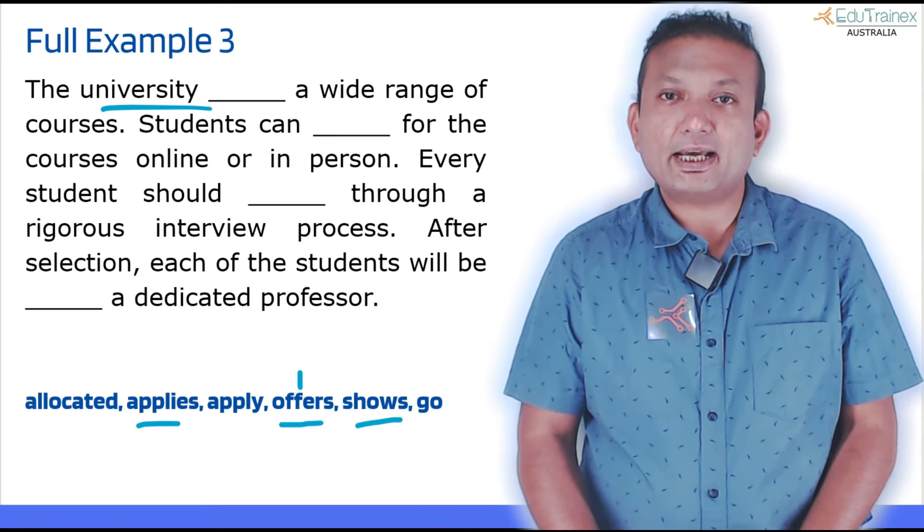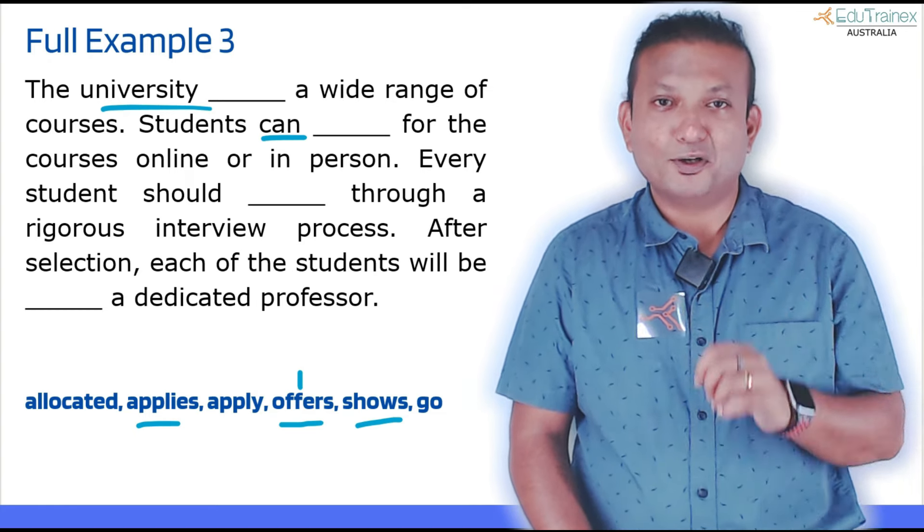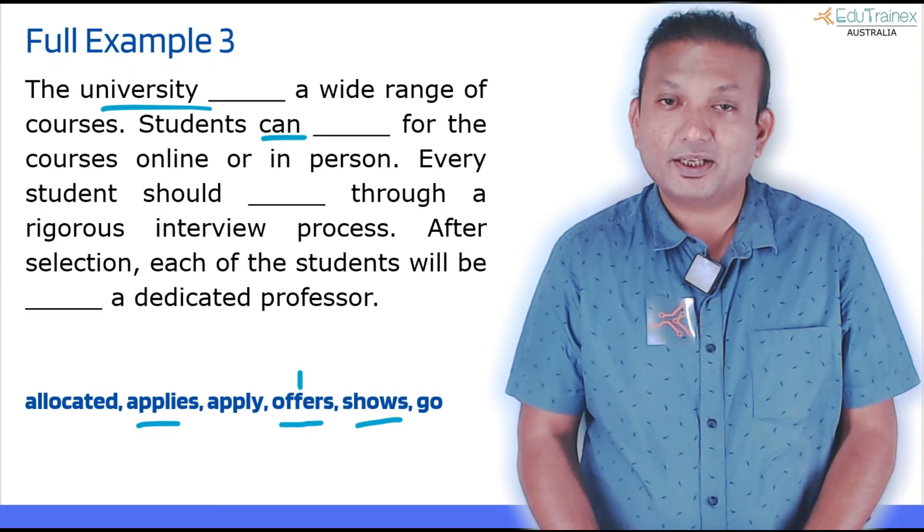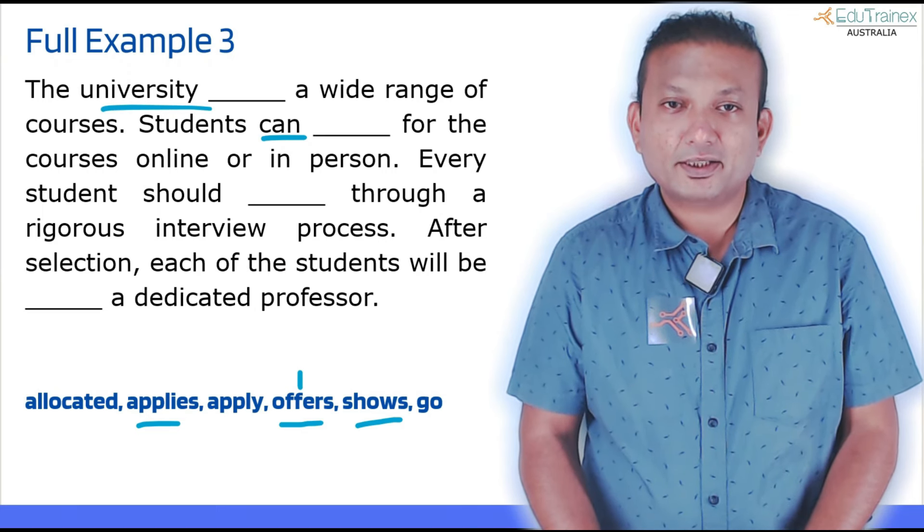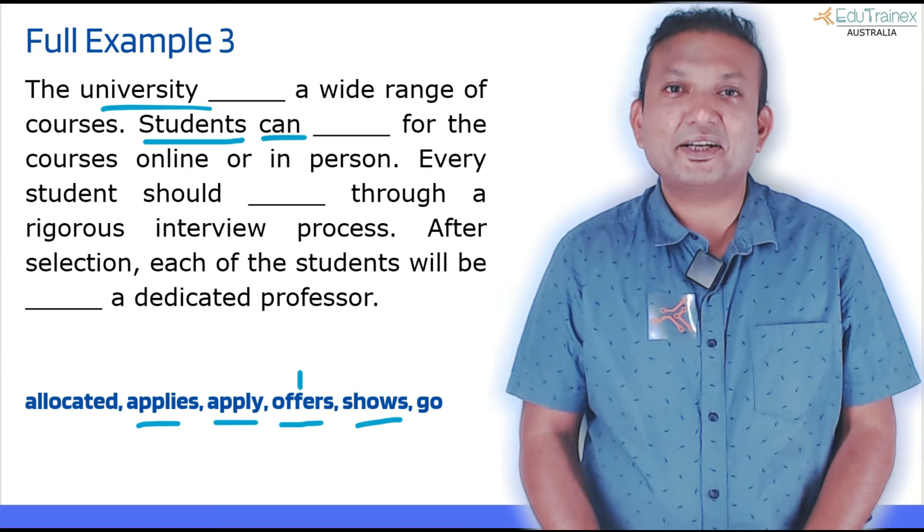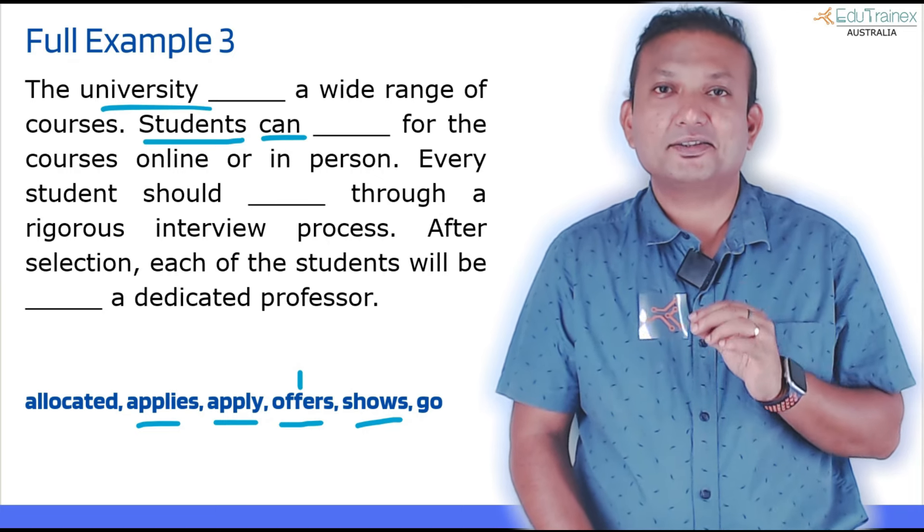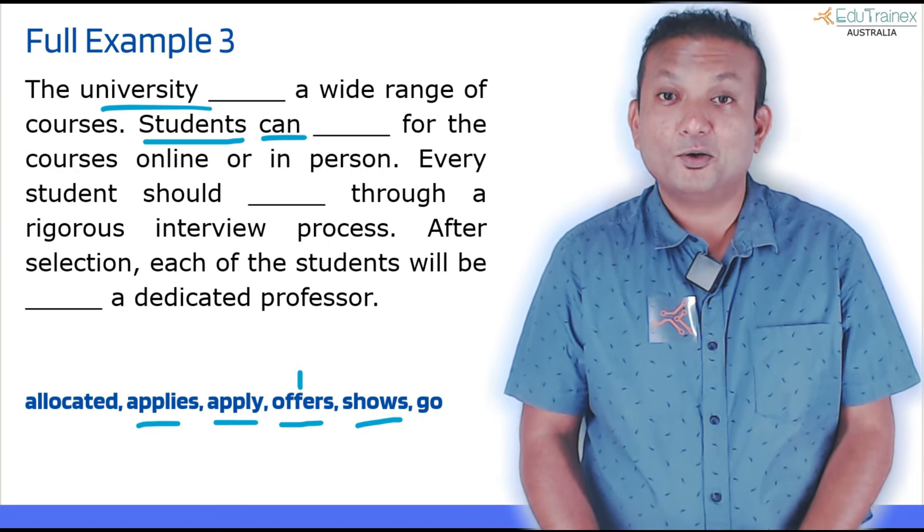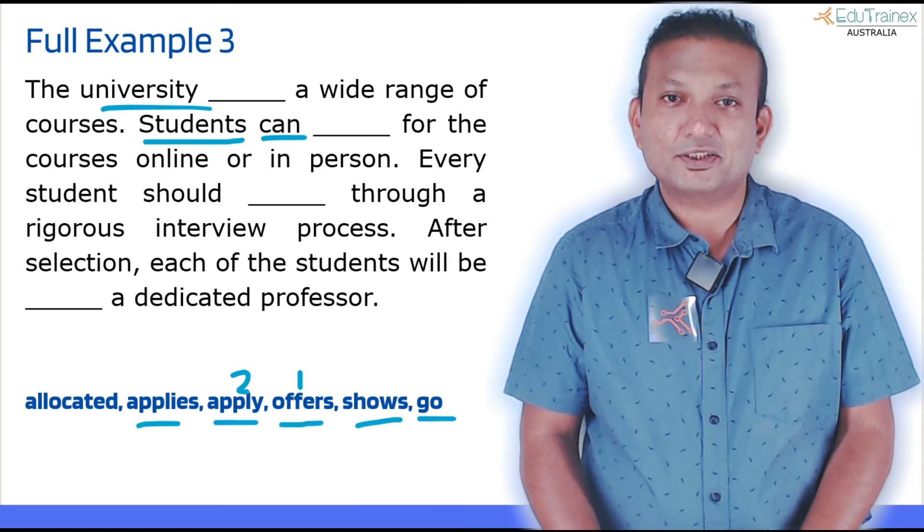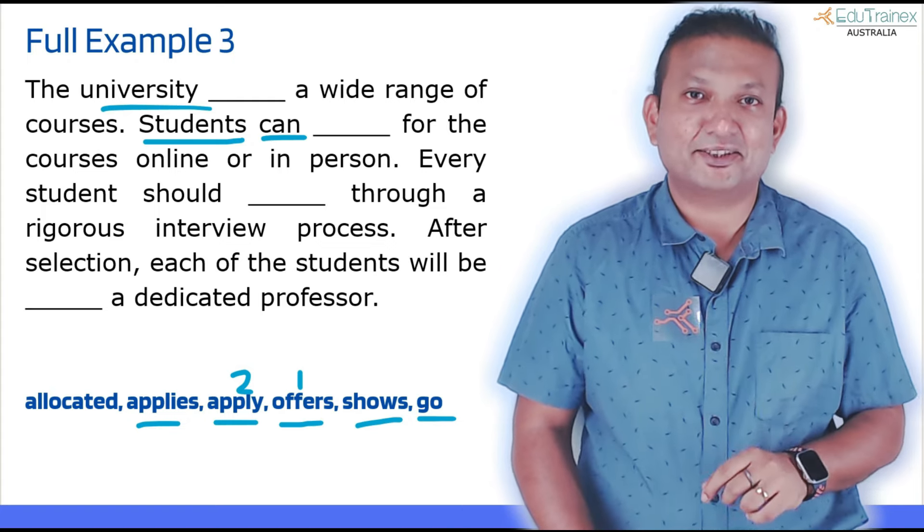Next one: 'Students can blank for the courses online or in person.' Can blank. Can what? Verb one will come here. Now let's find out whatever verb ones are here. We already located three. 'Students can apply' or 'apply.' Now again, you have to use another grammar hint here. This is plural students, so singular verb will come. So 'students can apply,' 'go' will not make sense here. So 'students can apply' makes the perfect fit here. See how two grammar techniques help you to find out the correct answer.